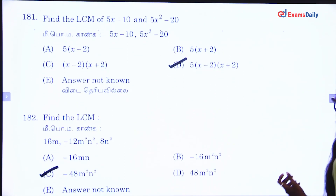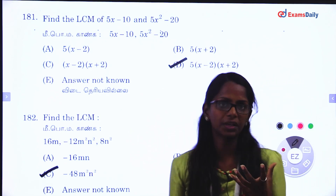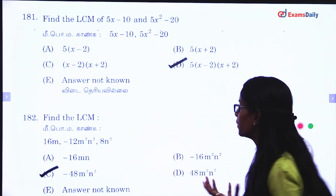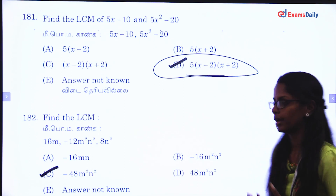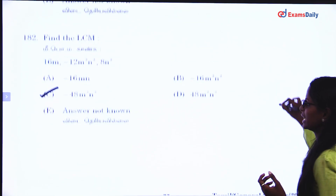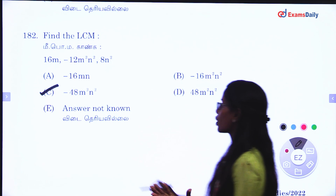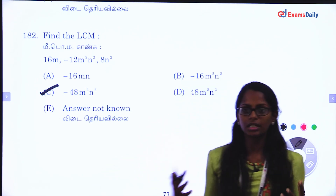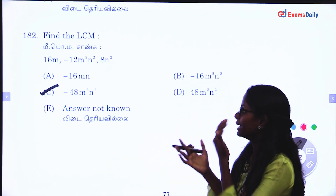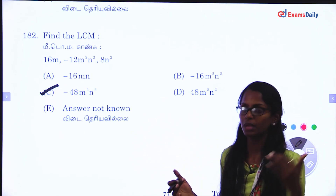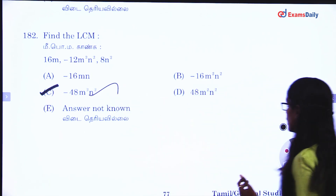Next question — find the LCM. Now two are common. You can choose a factor. The answer is 5 times (x minus 2)(x plus 2). So LCM is the factor. Generally M is the factor and N is the factor, which is the highest factor — M squared, N squared — and then minus 48.